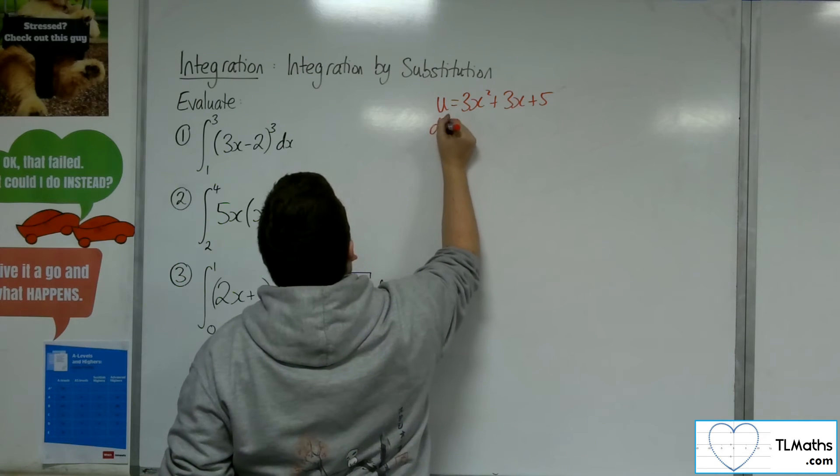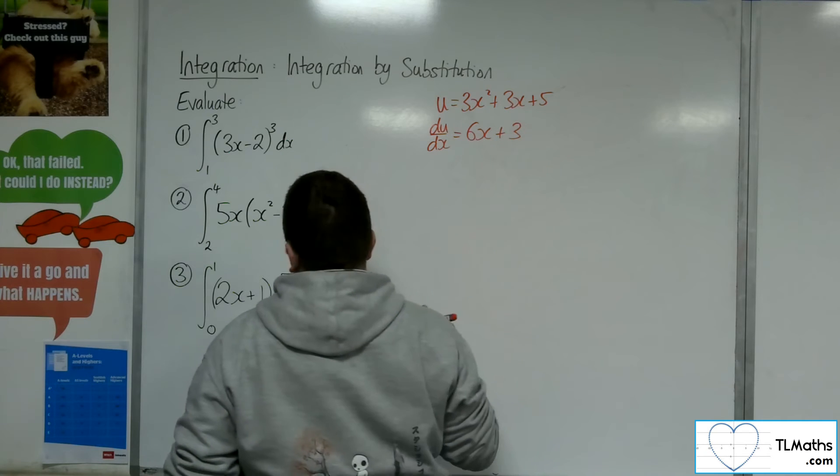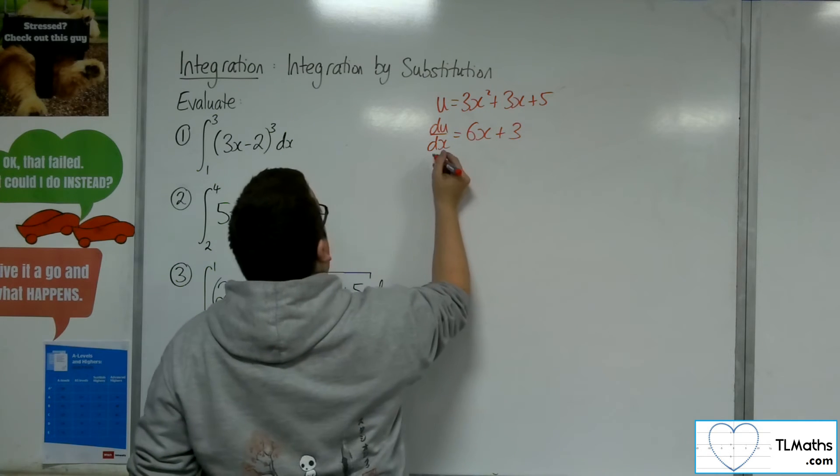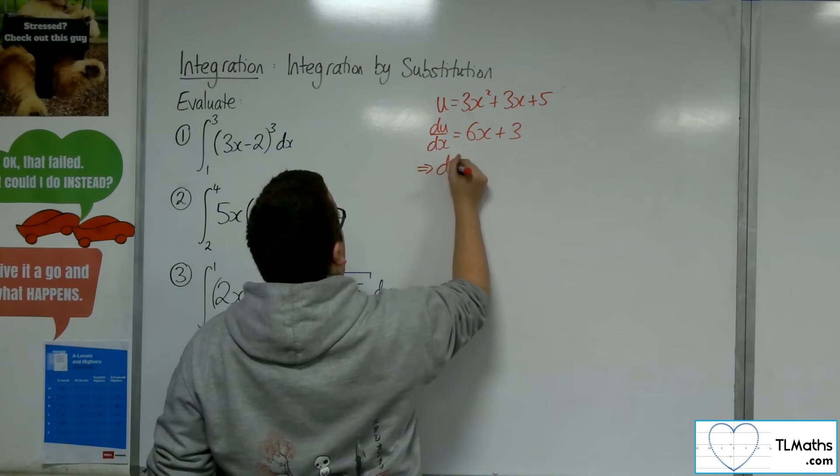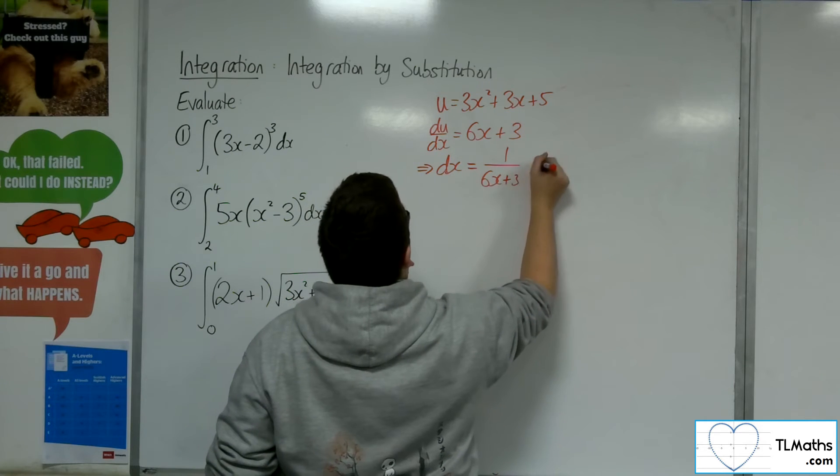So du by dx will be 6x plus 3. So if I rearrange that to get dx equals, I get 1 over 6x plus 3 du.